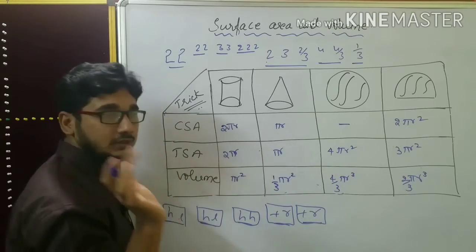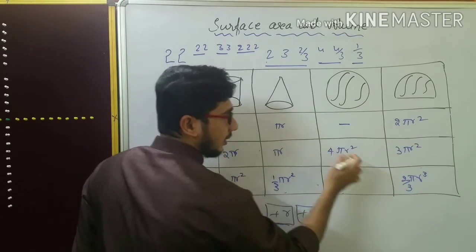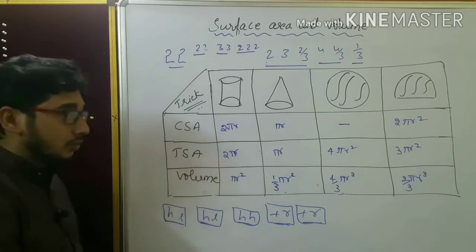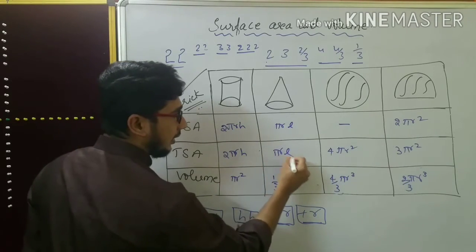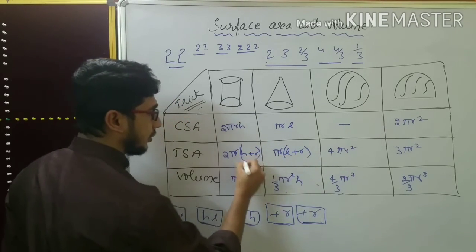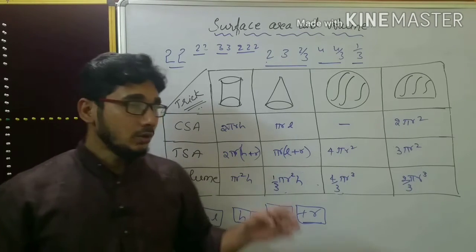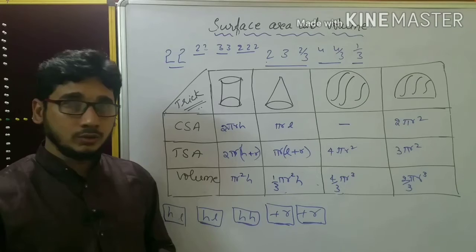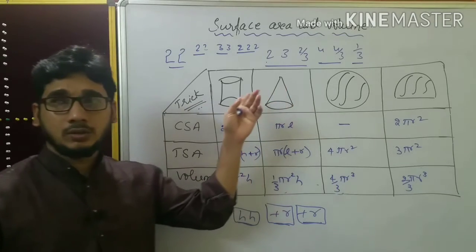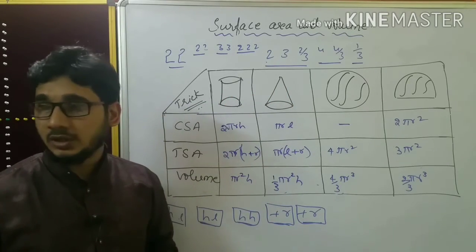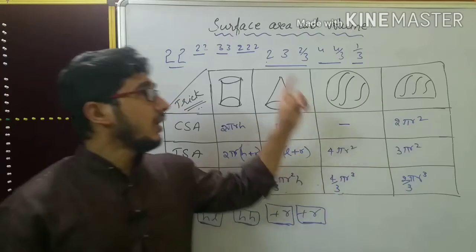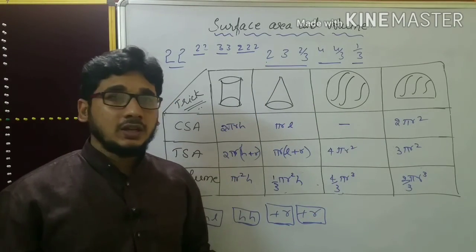Remember the sequence: two, two, two, three, two by three, four, four by three, one by three. From all these numbers in the poem you can write all 11 formulas. In the next video I will explain how to remember and generate the frustum of cone formulas, and also the cube and cuboid formulas. For now, practice these 11 formulas and memorize the poem.